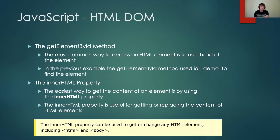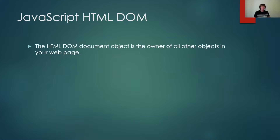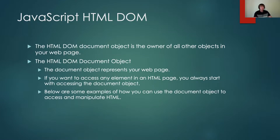innerHTML can be used to get or change any HTML element, including the HTML tag and the body, which is how single page applications are made. I can have a blank HTML document and change the contents of the HTML tag or the body tag, and my page can be completely dynamic at runtime. Which is why the HTML DOM is so powerful. The HTML DOM — the document object — is the owner of all objects in your web page. If you want to access any element in the HTML page, you always start with accessing the document object.